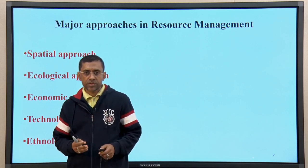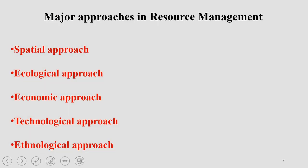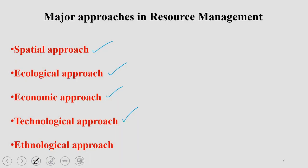There are different approaches being followed for natural resource management. The first one is the spatial approach, which depends on space, distribution, or location of resources. Second is the ecological approach, which considers ecology while managing resources. Third is the economic approach, which looks at the economic aspect. Fourth is the technological approach, where intervention of various technologies is critical for efficient resource management. And finally, we have the ethnological approach, which tries to bring people into the management system.